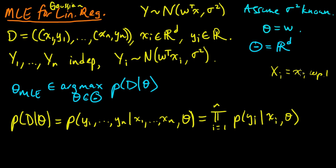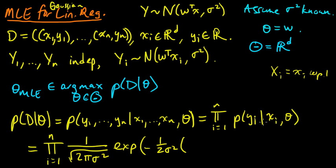Our model tells us that Yi is normal, and we can write these as a product of these normal densities. So it's 1 over the square root of 2 pi sigma squared, e to the minus 1 over 2 sigma squared times Yi minus the mean, which is W transpose Xi, that difference squared. So that's looking good. We got a good expression for our likelihood function.